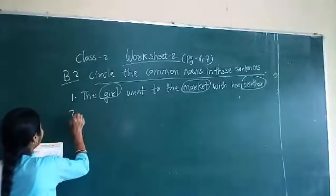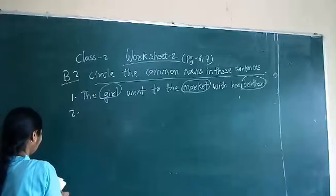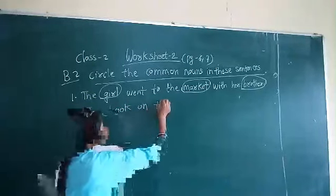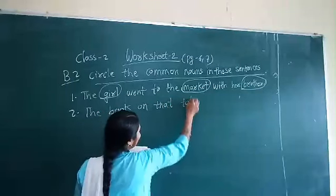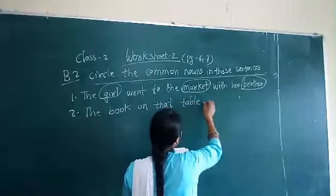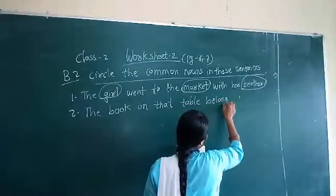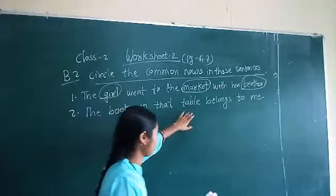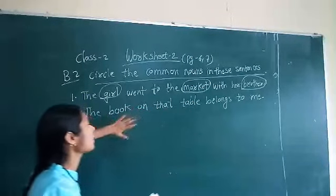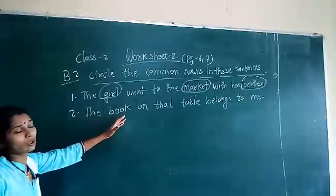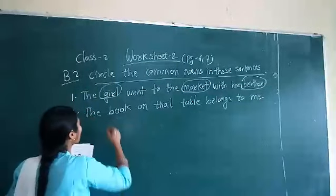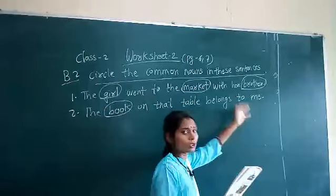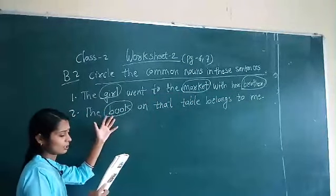Second sentence: 'The book on that table belongs to me.' The name of the book is not mentioned here, so 'book' is the common noun in this sentence. Circle it.